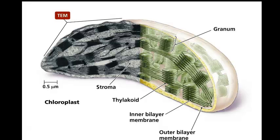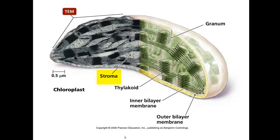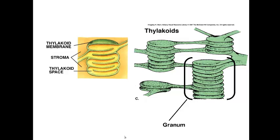Chloroplasts have a double membrane that partitions the chloroplast into compartments. Between the outer and inner membrane is a thin intermembrane space. Inside the inner membrane is a thick fluid called the stroma, which contains the chloroplast's DNA, ribosomes, and many enzymes. The inner membranes are arranged in interconnecting sacks called thylakoids, stacked like poker chips — each stack is called a granum. It is in the membrane of the thylakoid where we find the chlorophyll pigments used to trap sun energy and the proteins involved in harvesting and converting that energy into biomolecules.